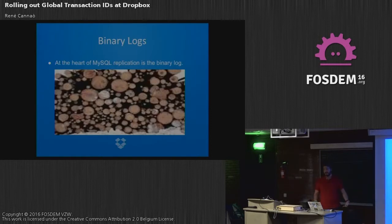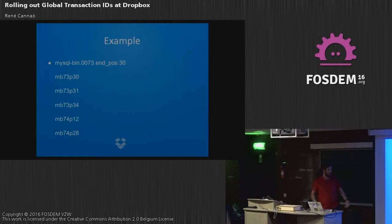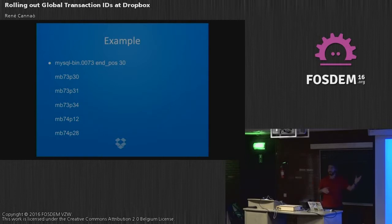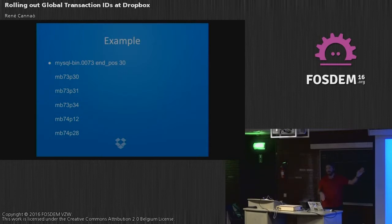The binary logs are at the very heart of MySQL replication — without them, replication is not possible. As for how MySQL binary logs look: we refer to them using a filename and a position. For example, 'mysql-binlog-000073' at position 30 means there is an application event at that specific position. In subsequent slides I'll summarize this as 'mb73:30' for brevity.